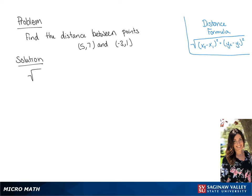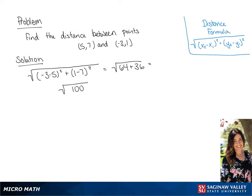If you want to find the distance between points (5, 7) and (-3, 1), we're going to plug these points into the distance formula that is in the top right-hand corner. So if we simplify this, we are going to have the square root of 64 plus 36, which is equal to the square root of 100, which can be simplified to 10.